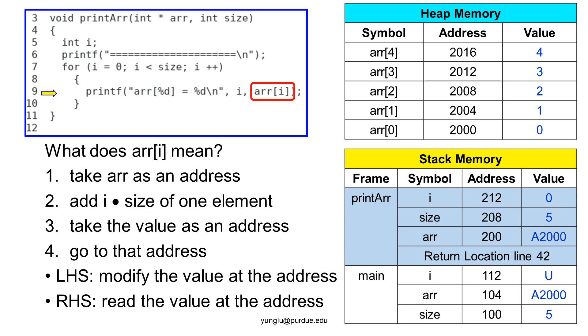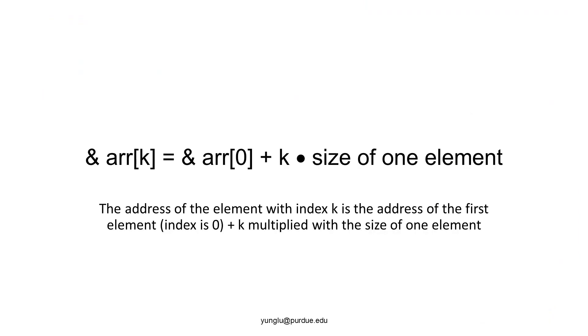The other two functions, double_arr and triple_arr, follow the same rules. This equation explains how addresses of array elements are calculated. The address of the element with index k is the address of the first element, index is zero, plus k multiplied with the size of one element.